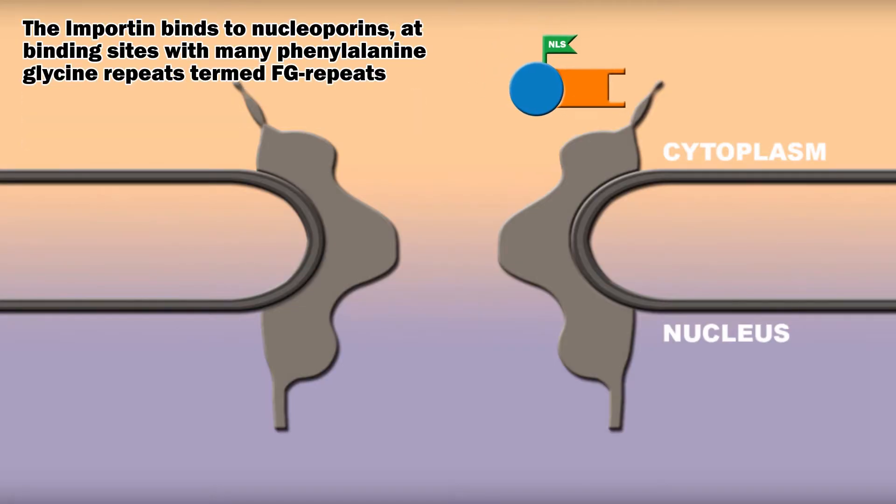The importin binds to nucleoporins at binding sites with many phenylalanine glycine repeats, termed FG repeats, in the nuclear pore complex, and is transported into the nucleus.